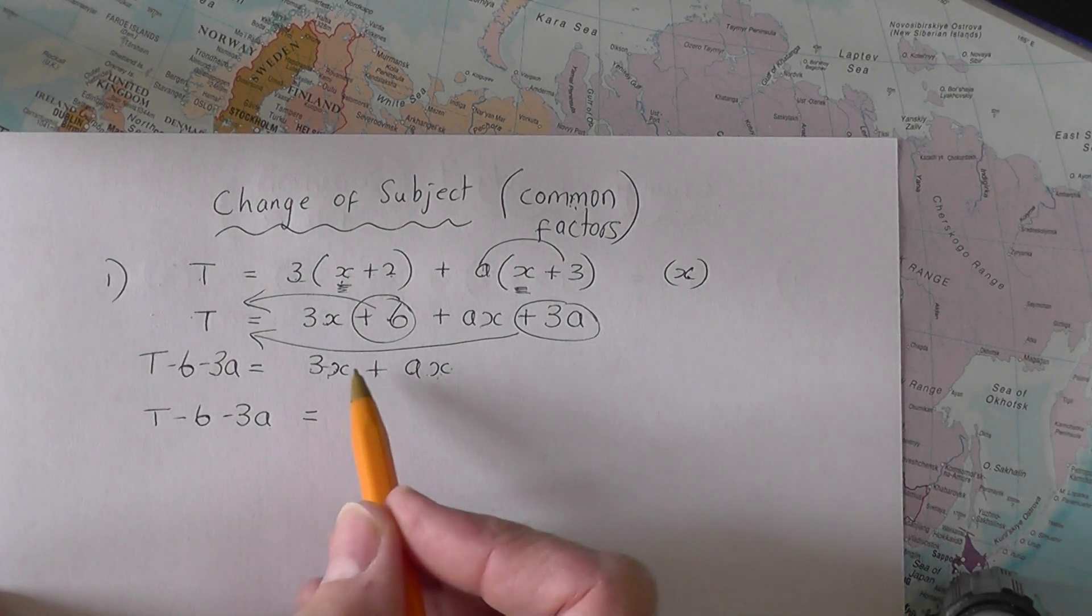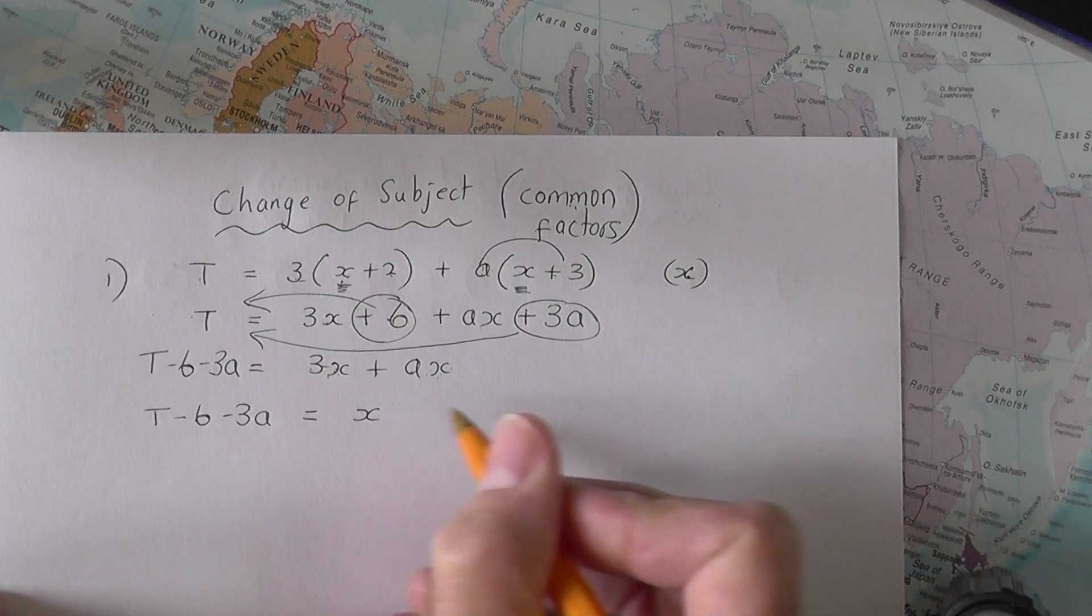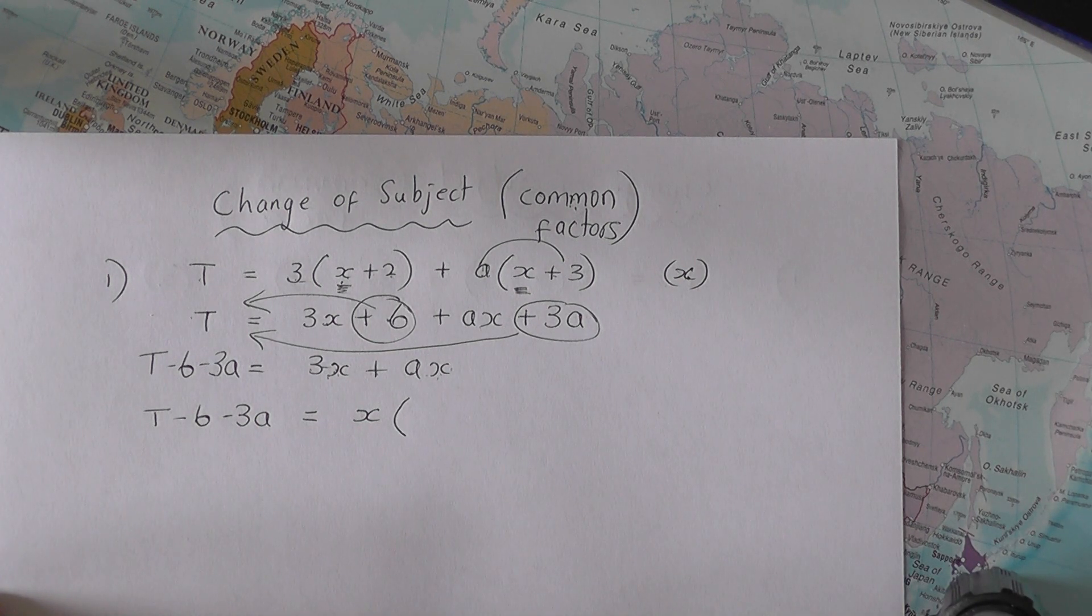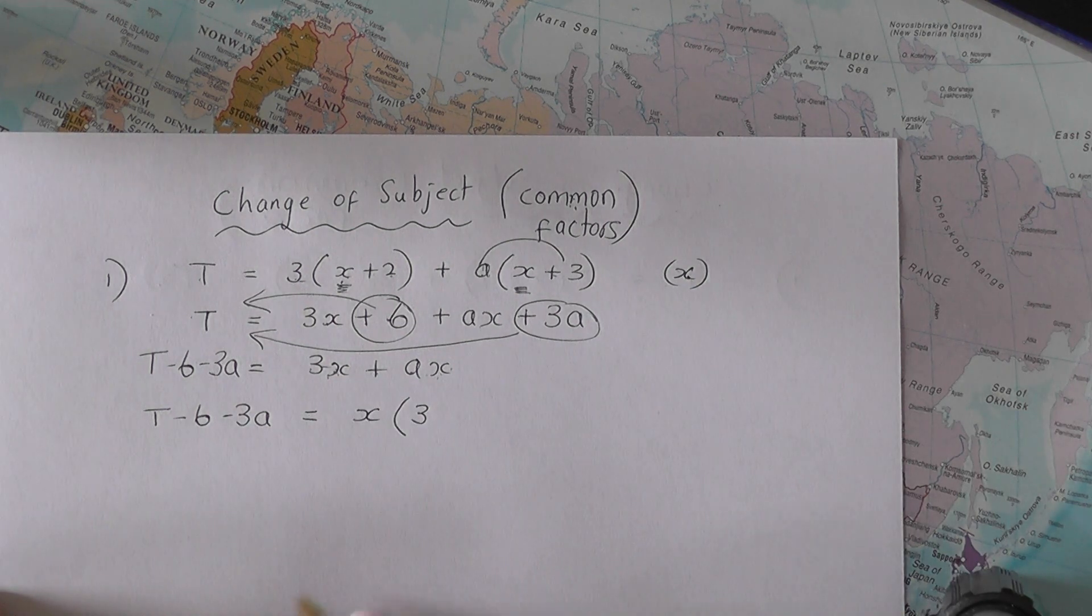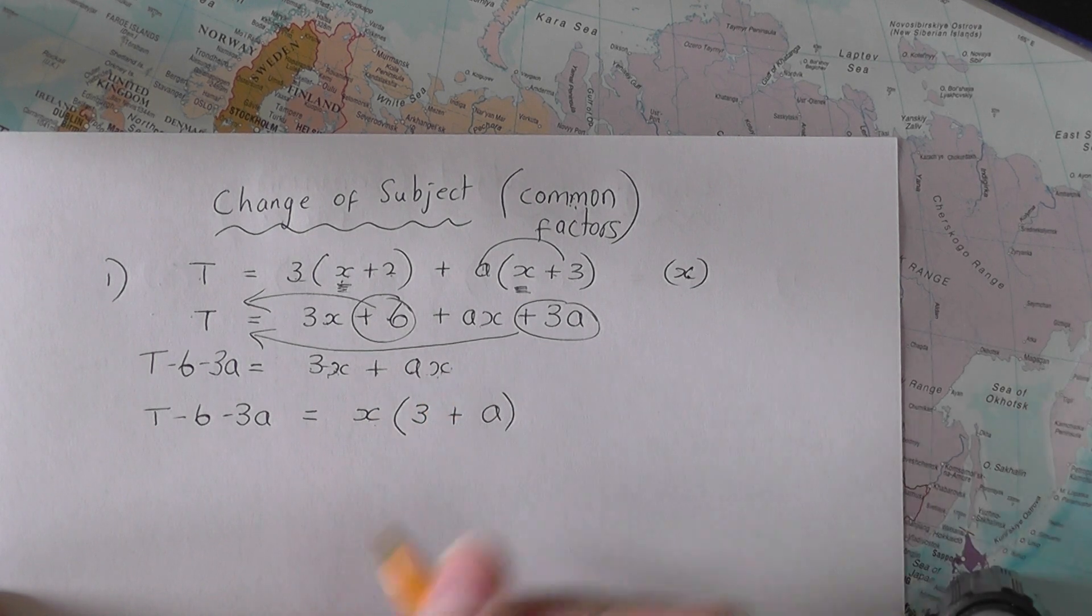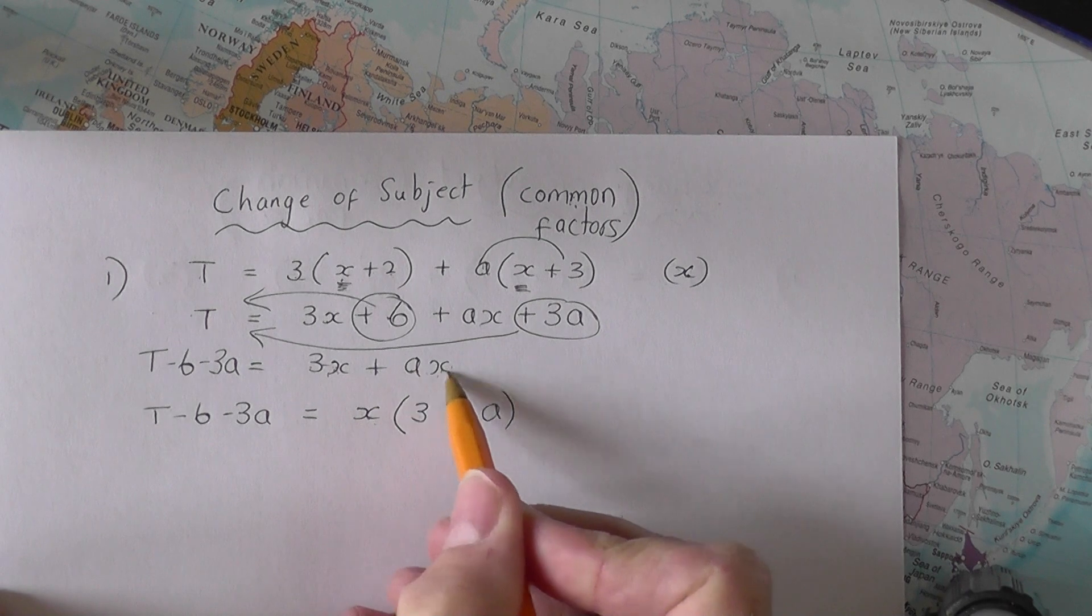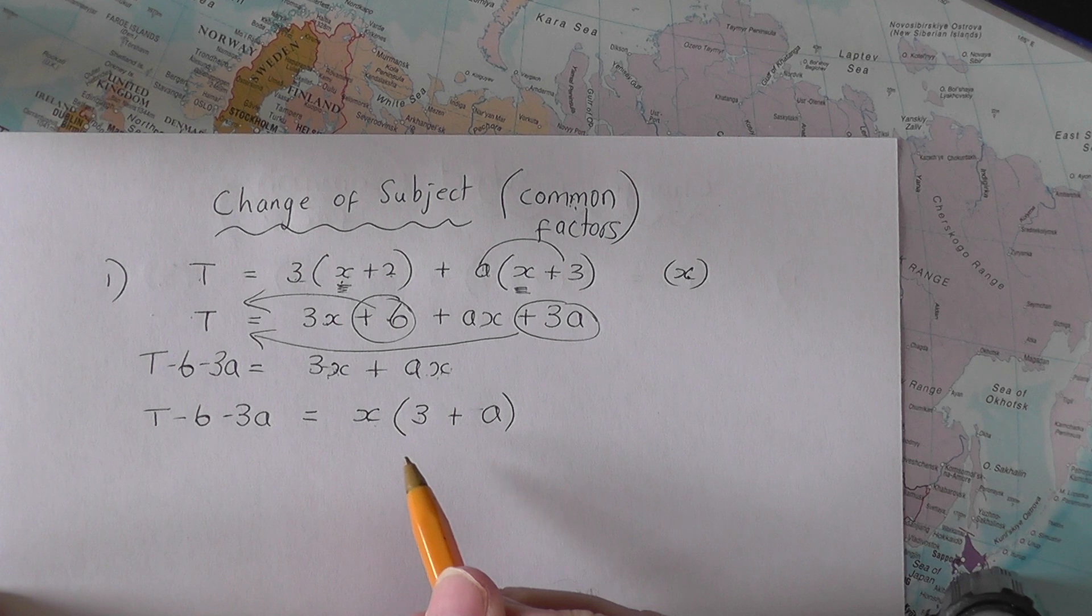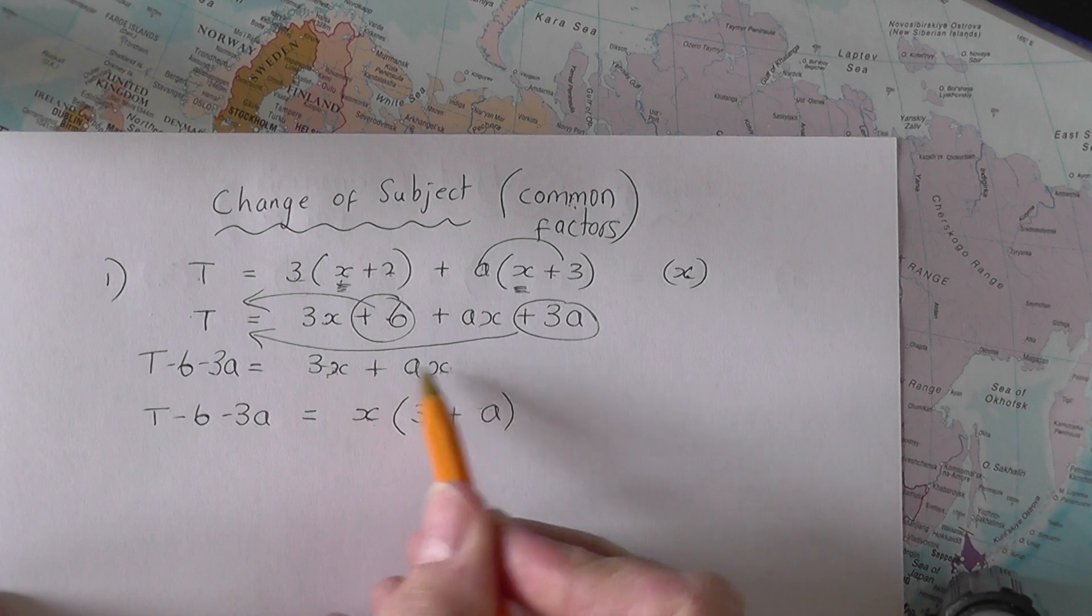We look at these two terms and we say look at the X there, look at the X there. The X is what we call a common factor. The X can be taken out as a common factor. The X times three would give three X plus and then X times A would give you AX. So X times three is three X. X times A is AX. So that is the same as that. Why is this useful? It's useful because now there's only one X on the right hand side, not two.